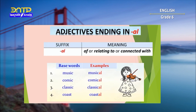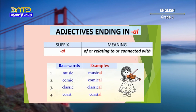Let us look at adjectives ending in -AL. The suffix -AL means 'of, relating to, or connected with.' Examples: music → musical (related to music) — 'she is musical'; comic → comical (relating to comedy) — 'the circus clown was very comical'; classic → classical (relating to art forms such as a style of music written in Europe in the past) — 'she likes classical music'; coast → coastal (of a coast) — 'it is a coastal settlement.'